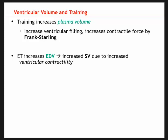Endurance training increases end-diastolic volume due to increased contractility. Endurance training results in a decreased resting heart rate, but to maintain the same cardiac output of around 4.8 to 5 liters per minute, stroke volume must increase. An increase in end-diastolic volume means more blood is filled into the ventricles and more is available to be pumped, resulting in increased stroke volume and ejection fraction, while end-systolic volume decreases — less blood remains in the ventricles after systole.